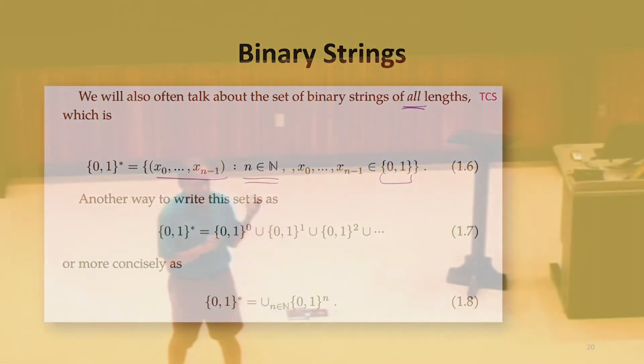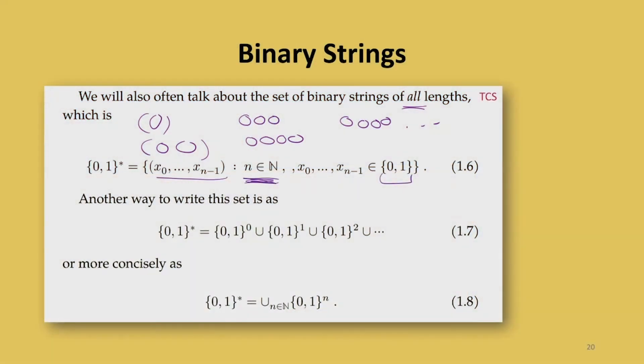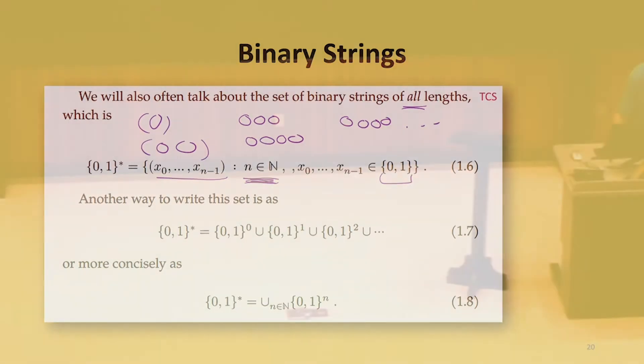So now do we have an easy answer to can we represent all natural numbers with binary strings? For making those notations more compact, but not necessary at all to represent them all. So that I hope gives you an intuition that we can do this. It's not a proof because it's using dot dot dots. So let's see if we can do a proof.